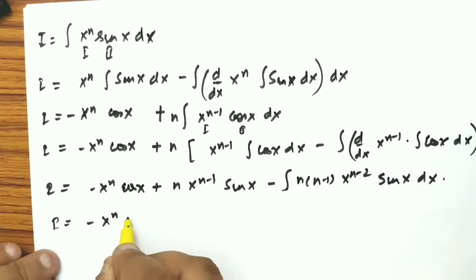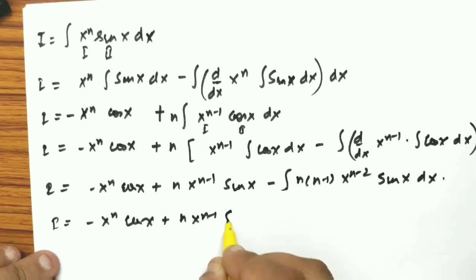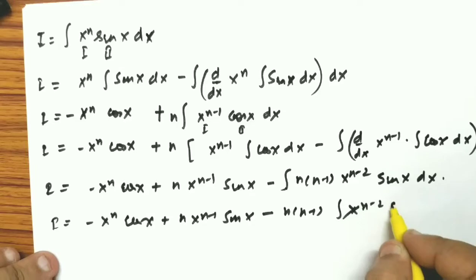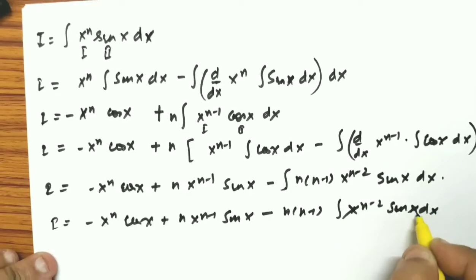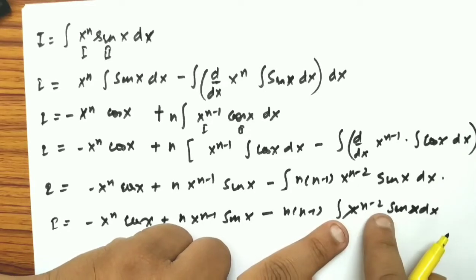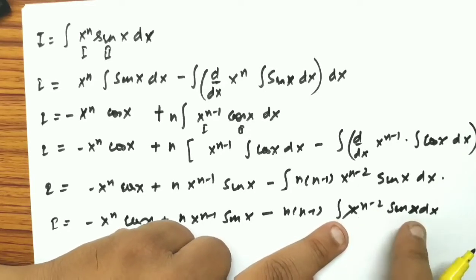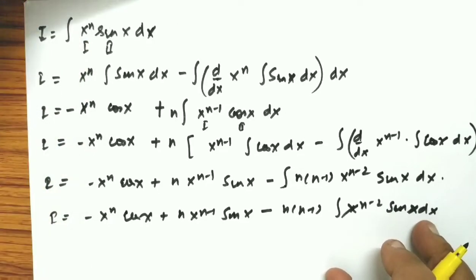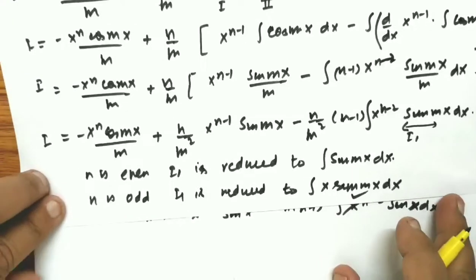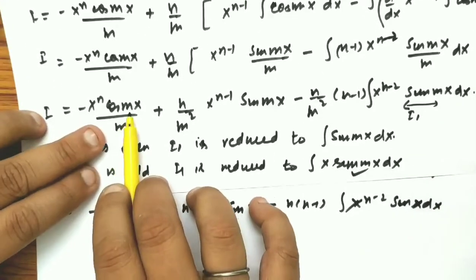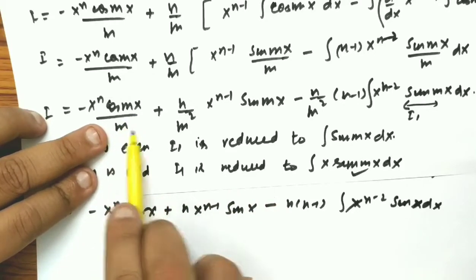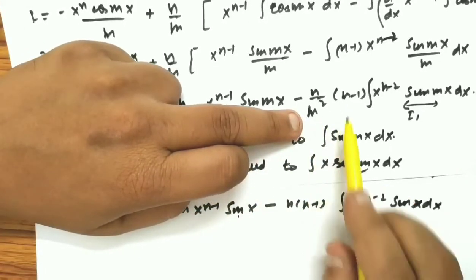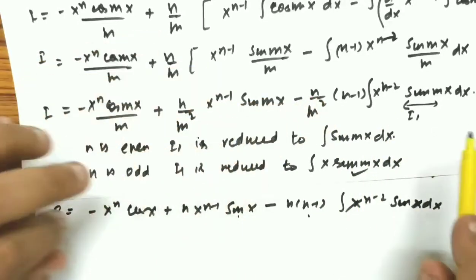Applying by parts again: minus x to the power n · cos(x) plus n · [x to the power n−1 · sin(x) minus n(n−1) · integral of x to the power n−2 · sin(x) dx]. When n is even, the power reduces to 0 and only sin(x) remains, which is easy to integrate.